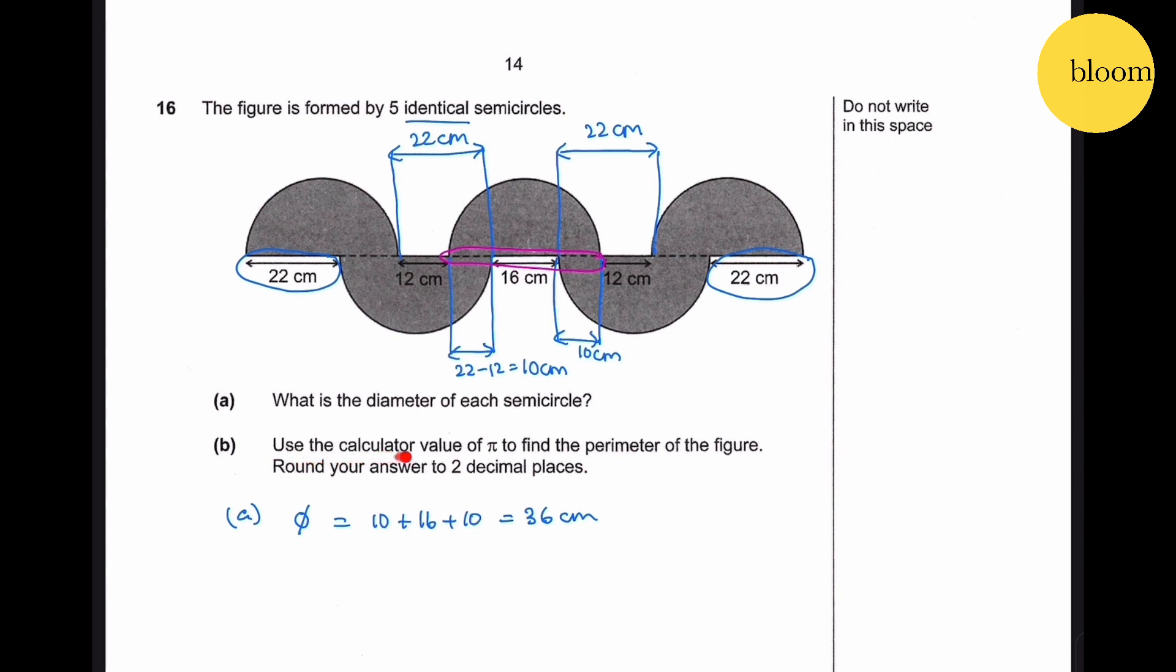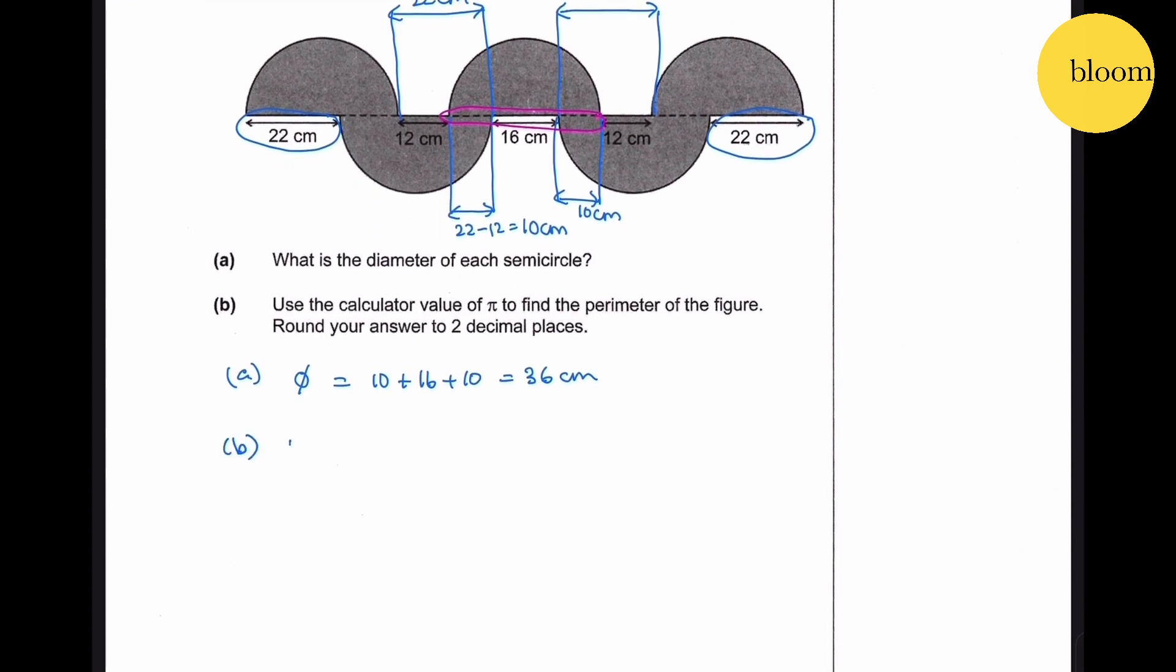Part B: Use the calculator value of pi to find the perimeter of the figure. Round your answer to two decimal places. Radius is given by diameter over two which is 36 over 2 that gives us 18 cm. The distance of half circumference equals 2πr over 2 equals πr which gives us 18π.